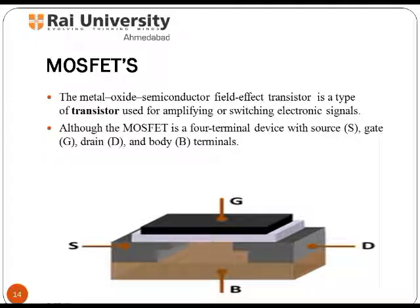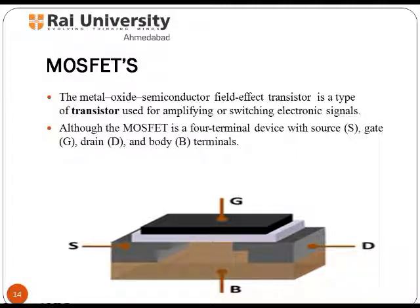A power MOSFET is a specific type of metal oxide semiconductor field effect transistor designed to handle significant power levels. It is the most widely used as a low voltage switch and can be found in most power supplies, DC to DC converters, and low voltage motor controllers. Basically, a MOSFET contains four terminals: source, gate, drain, and body.